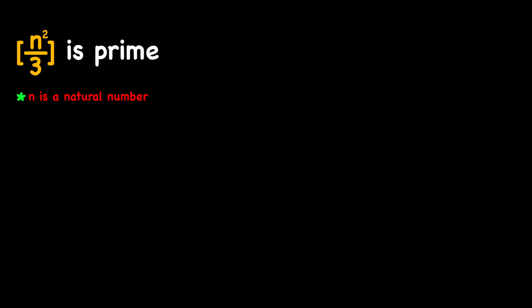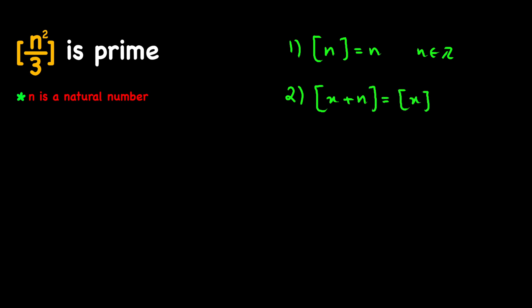Before solving our problem, let's review two properties of the floor function that I'm going to use in this video. The first one states that the floor of an integer is equal to that integer itself. The second one states that the floor of a number plus an integer is equal to the floor of that number plus that integer.